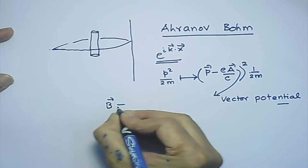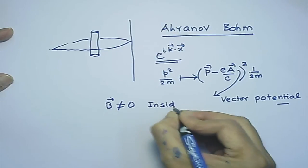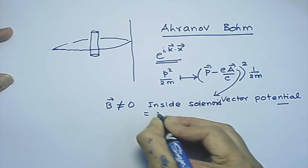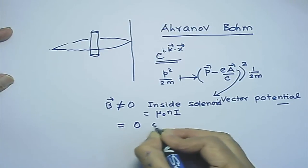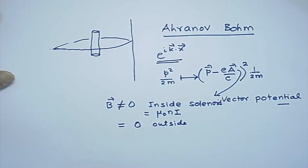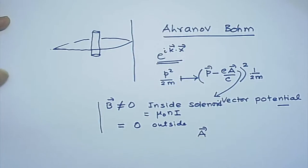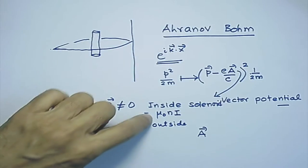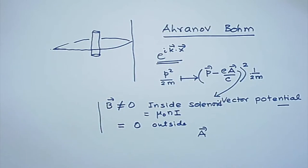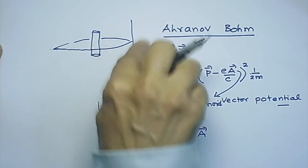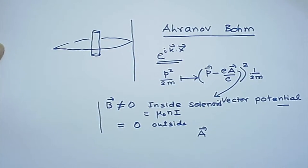The solenoid has B ≠ 0 inside (given by mu_0 n i) but B = 0 outside. However, when we calculate A both inside and outside, A is nonzero outside — del×A = 0 outside does not mean A = 0. The two electron beams, going around the solenoid on either side, are not exposed to the magnetic field but are exposed to the vector potential. Solving the quantum mechanical problem shows the wave function picks up an additional phase, which causes the fringe shift. This question cannot be answered completely classically.